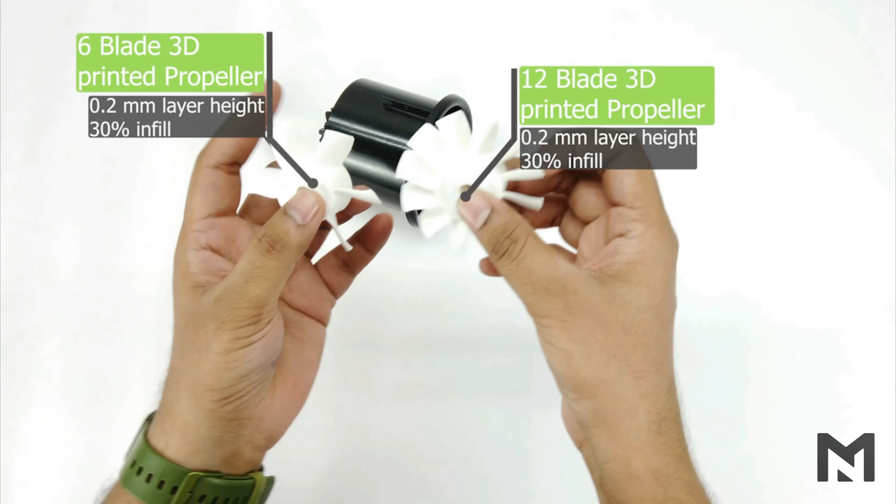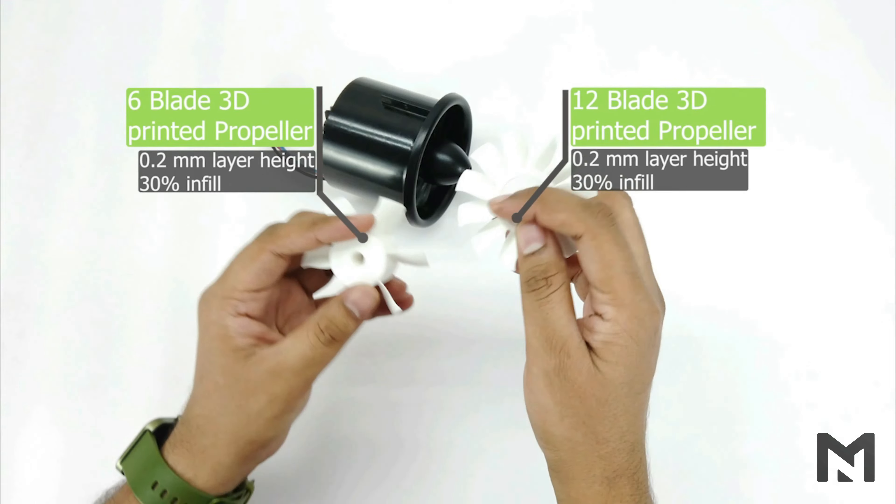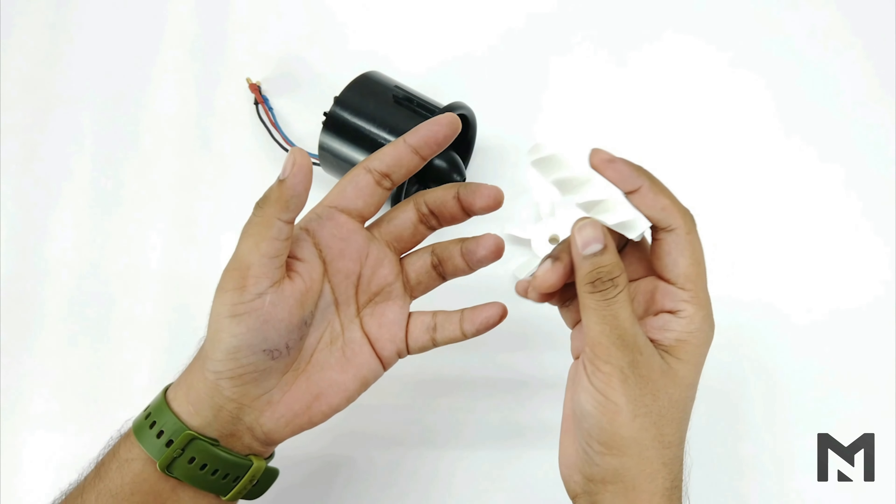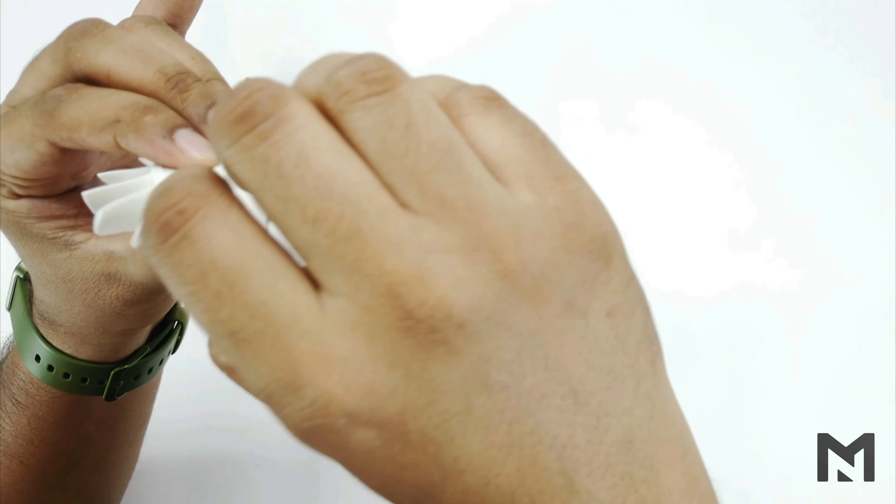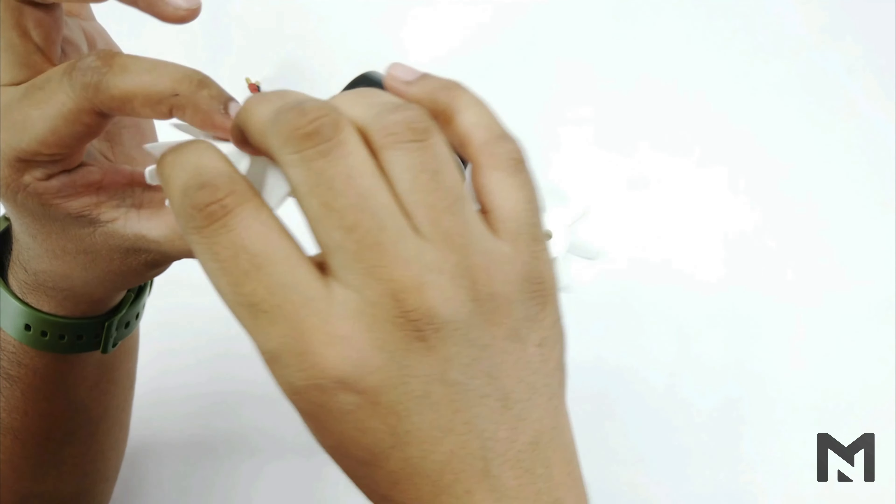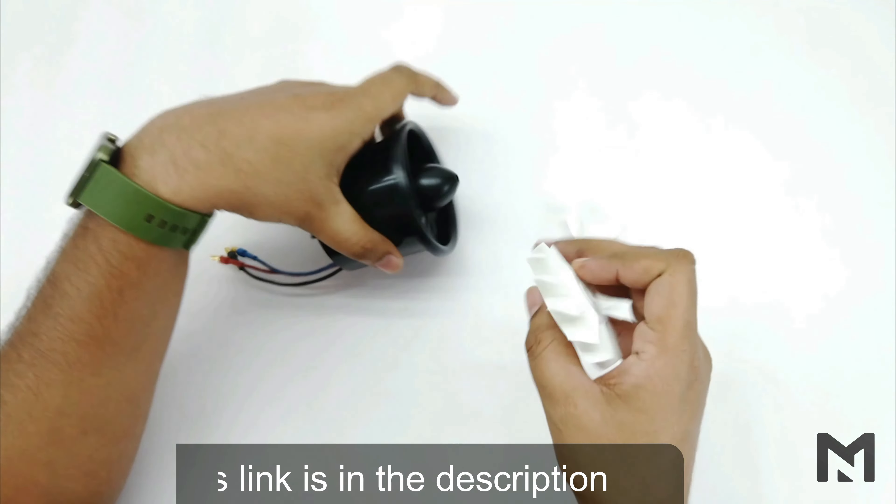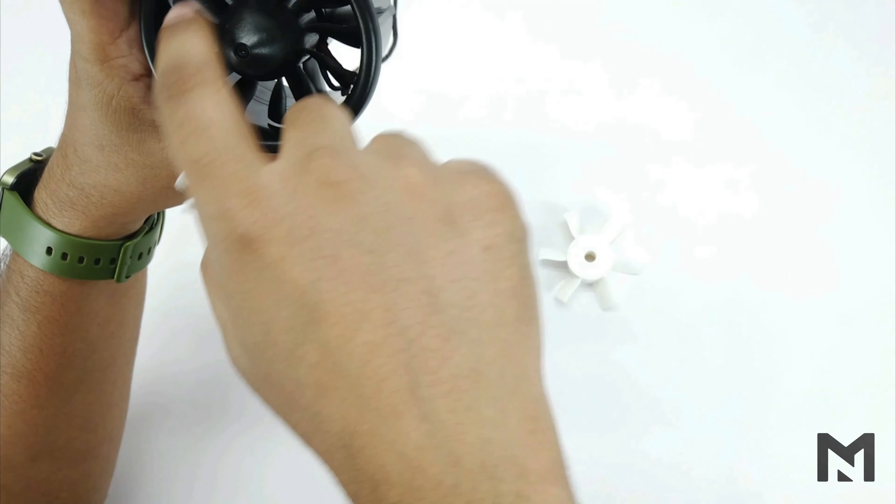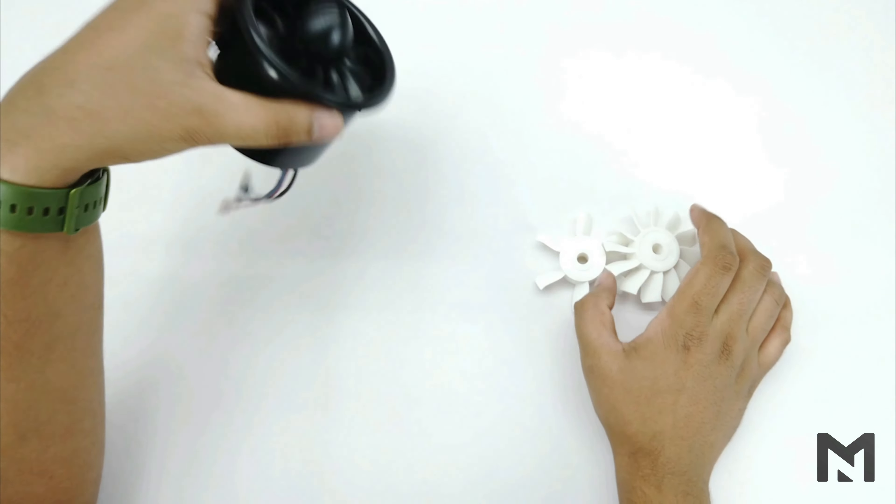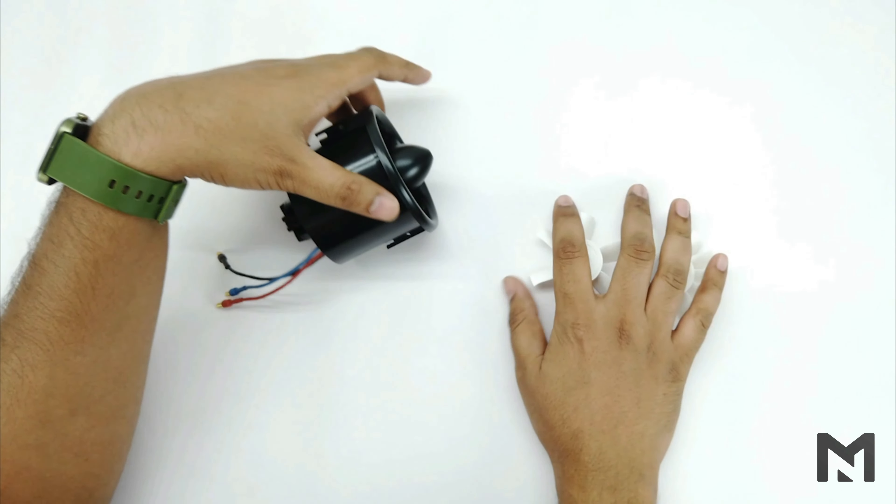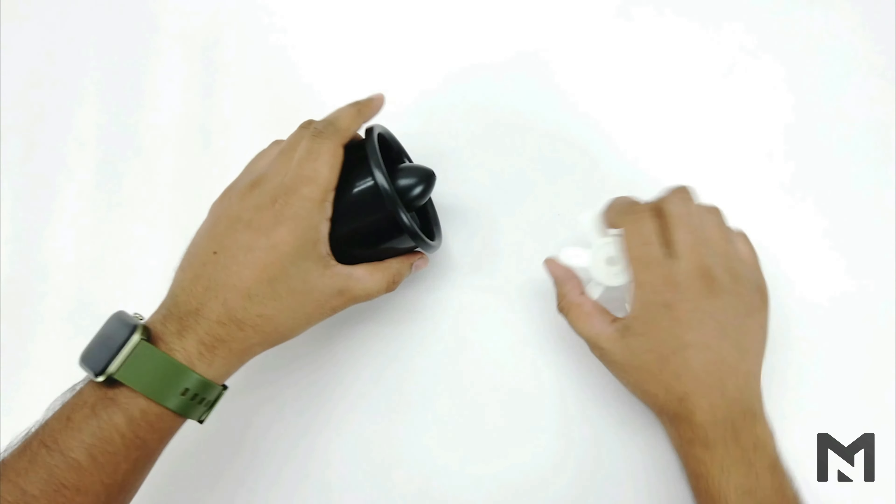I will also test these two propellers that I have designed. One is 12-blade and the other one is 6-bladed. I have 3D printed both of them with 0.2mm layer height and 30% infill. 0.2mm layer height because we need a good force of adhesion and better surface finish between the layers of the propellers, so these should be quite strong. Both these propellers have identical blades as compared to the original design. First I will test the initial one and then test the other two propellers, and after the thrust test, I will analyze and compare the observations. Let's begin.